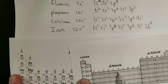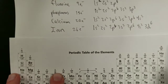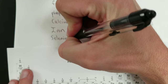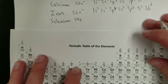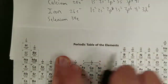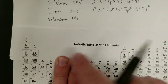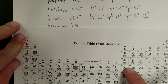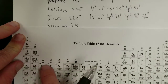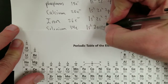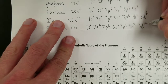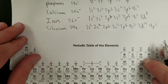Iron is six positions into the d-block, so you predict 3d6 based on its position. For selenium, with its 34 electrons, you continue the same pattern: 1s2, 2s2, 2p6, 3s2, 3p6, 4s2, 3d10, 4p4. That's the full electron configuration for selenium.